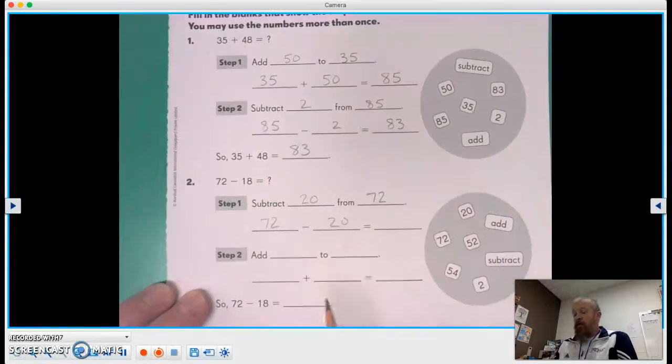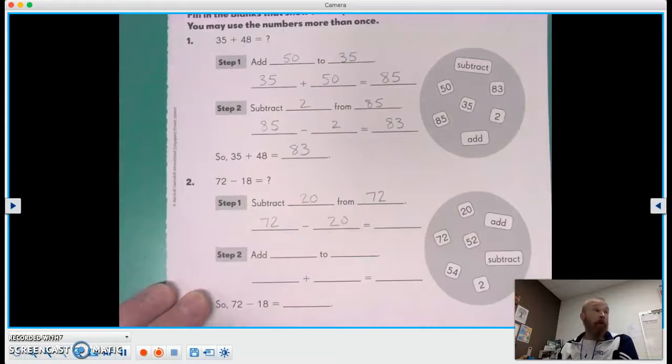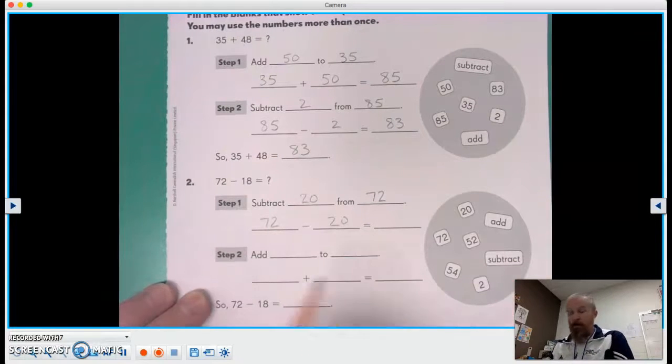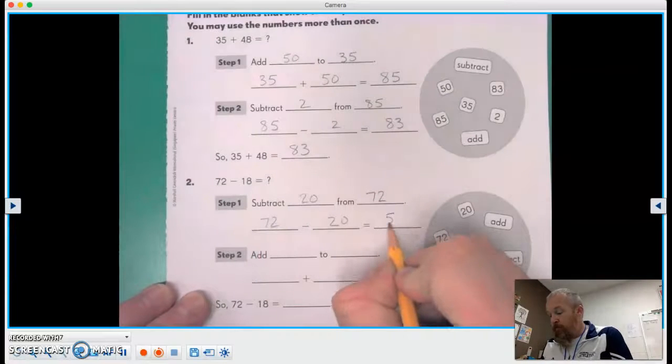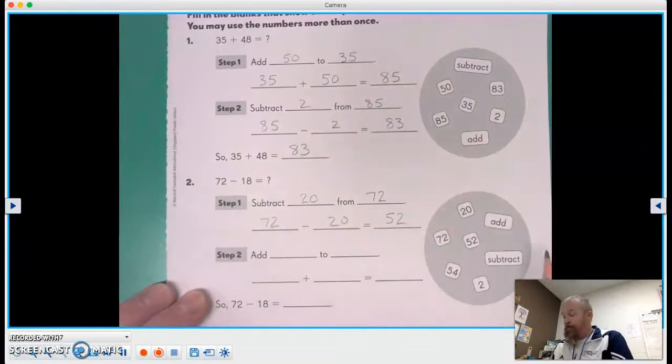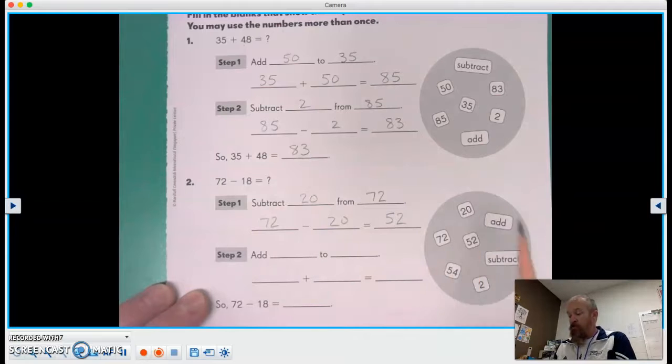So 72 minus 20, and again, we want one of them zeroed out, right? So it makes it a little bit easier, kind of like rounding does. So 72 minus 20 is 52. There's our 52 or 72 or 20.